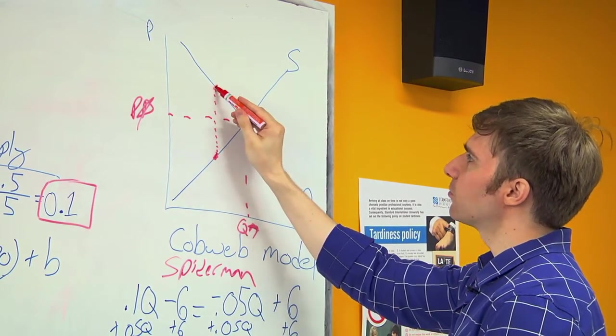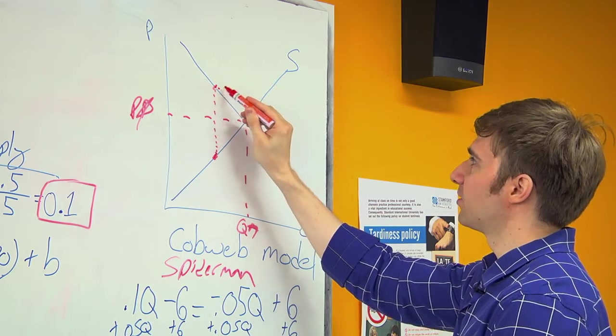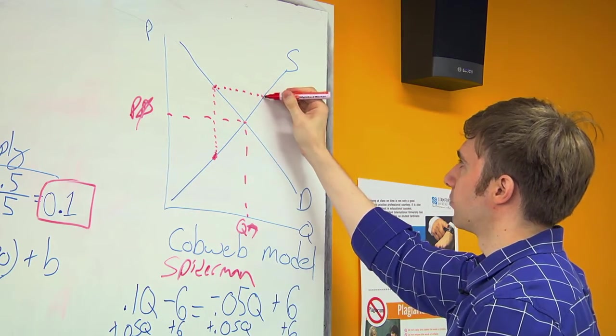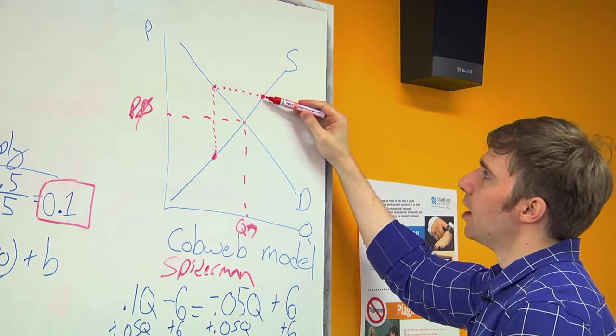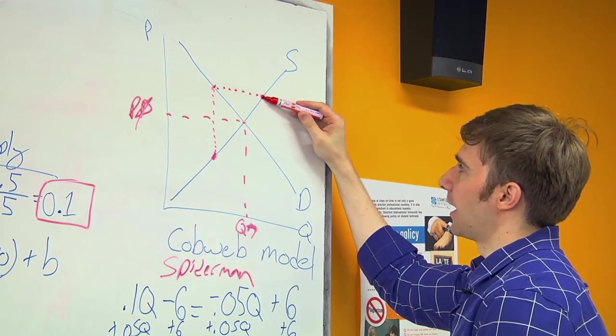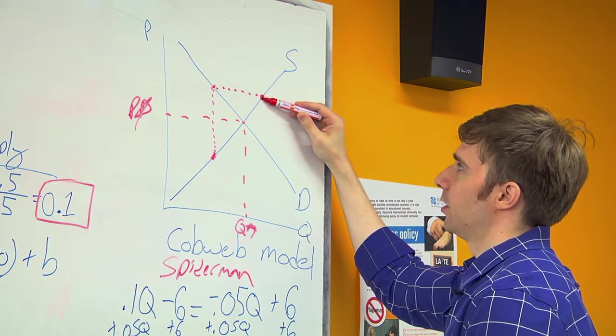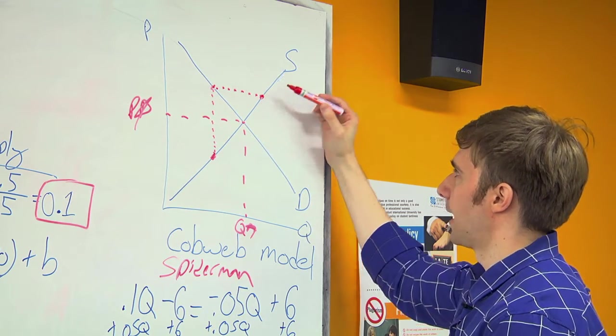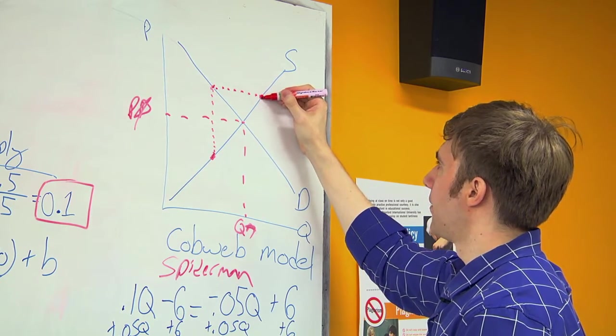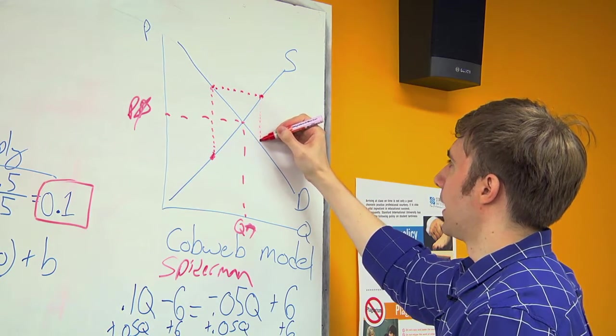At this price, the farmer would like to supply this amount. At this amount, at this price, we'll have less demand. Our demand will be there.